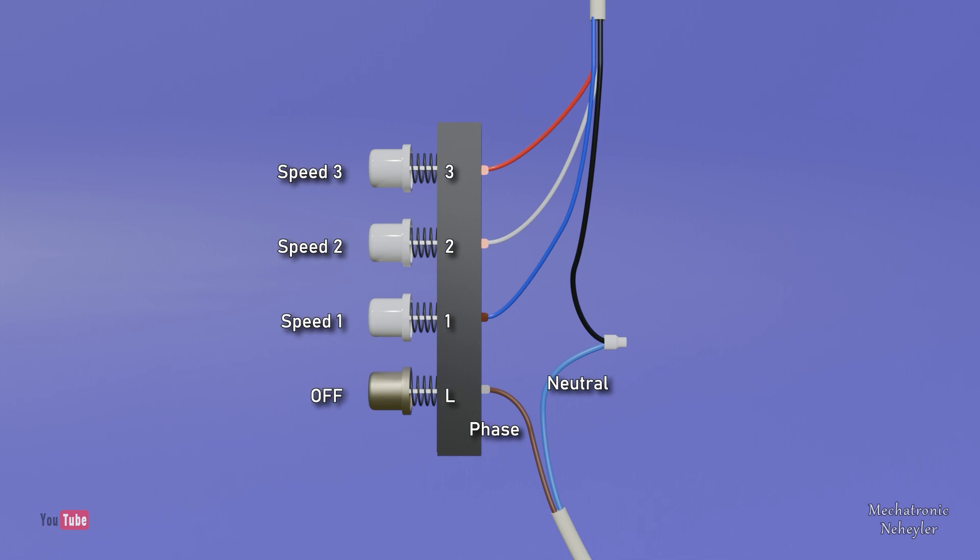The other three cables are connected to the fan speed selector. On the speed selector we have four buttons, of which the three white buttons are for speed control and the remaining button is to turn off the fan.